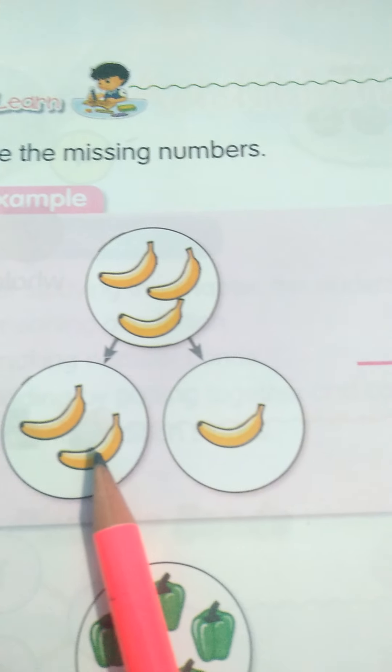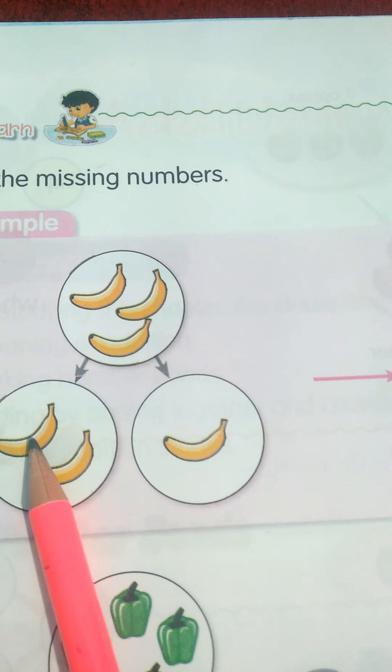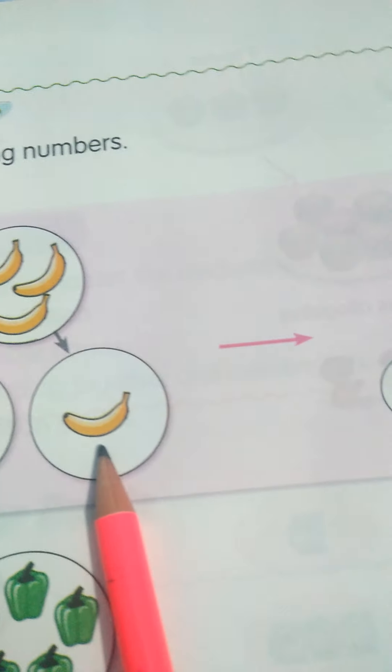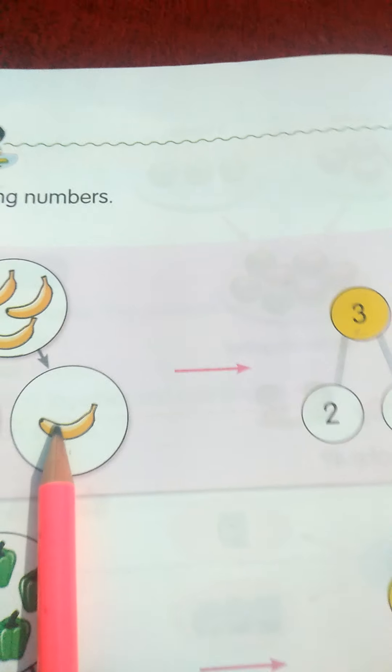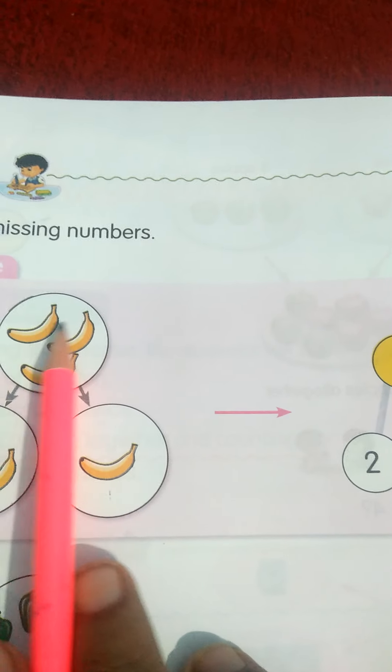See here — either kitna banana hai? 2 plus 1. So, kitna hoa? 3, na? 2 bananas and 1 banana. Either kitna hoa? 1, 2, 3. Okay, 3.